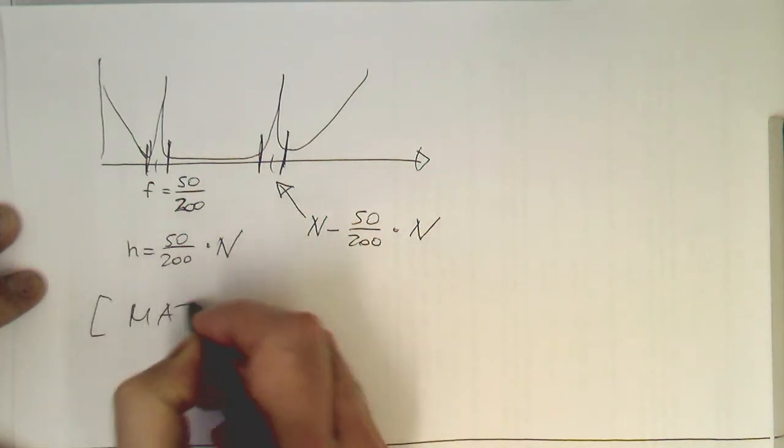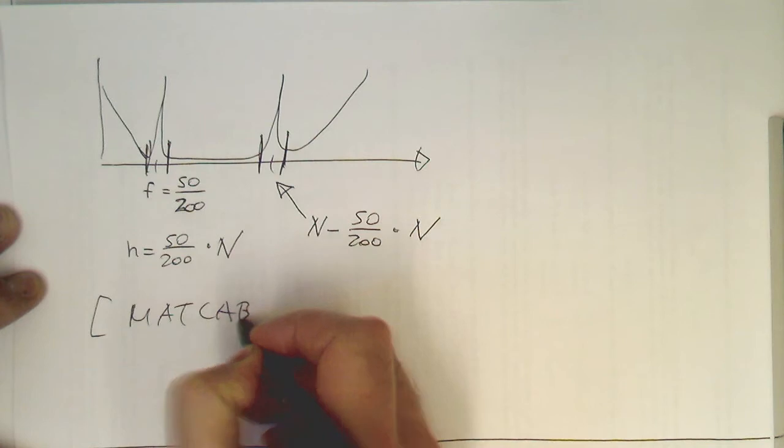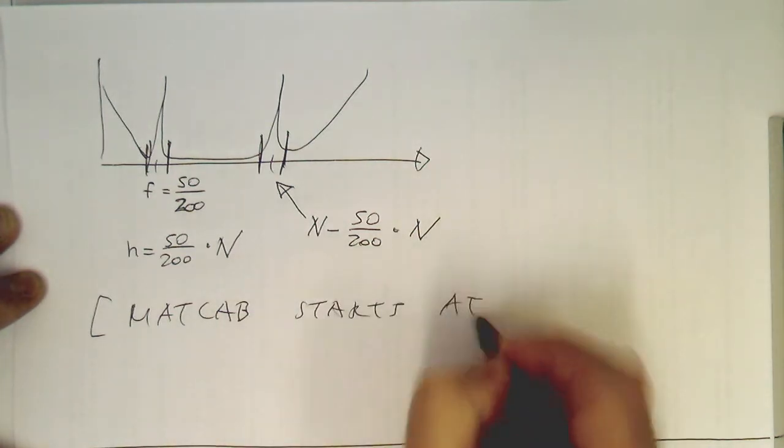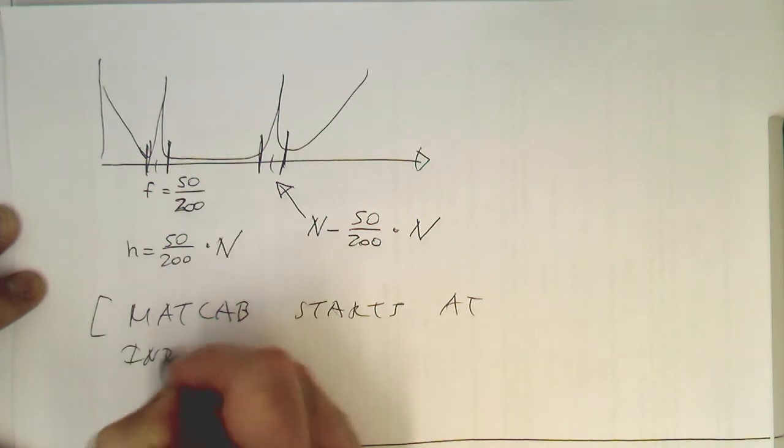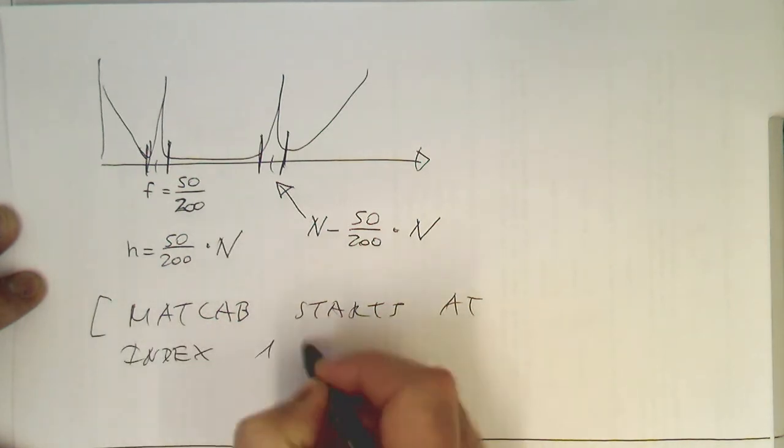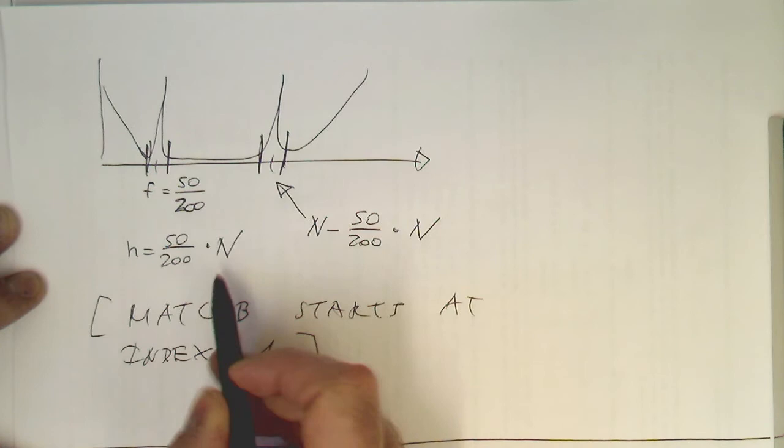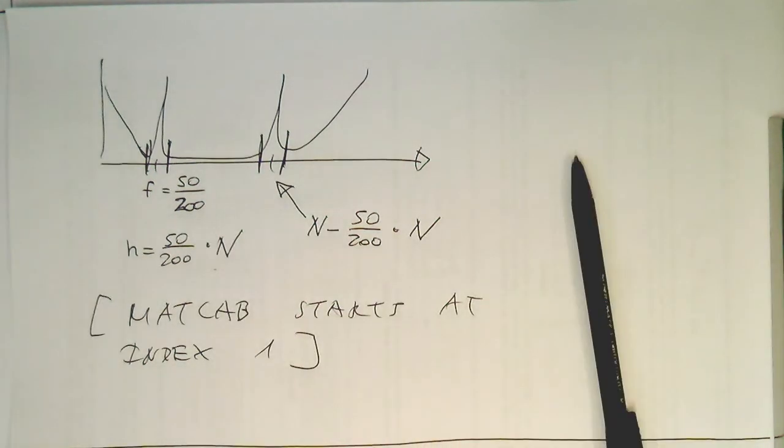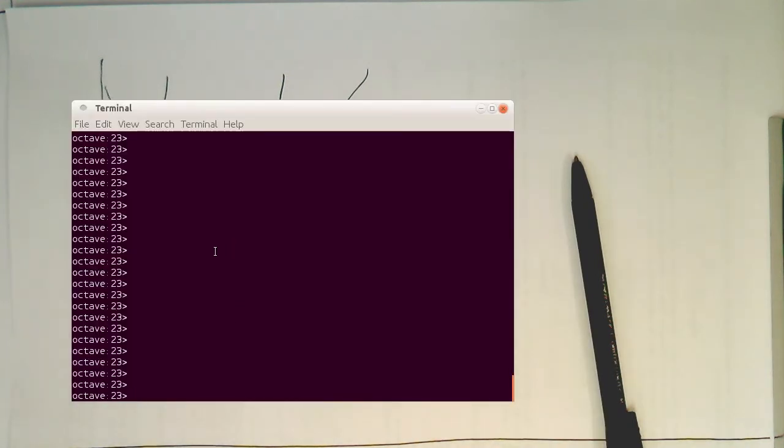Also remember MATLAB starts at index one and not zero. So we need to shift everything by one index number. So now let's create these MATLAB commands to filter out the 50 Hertz.